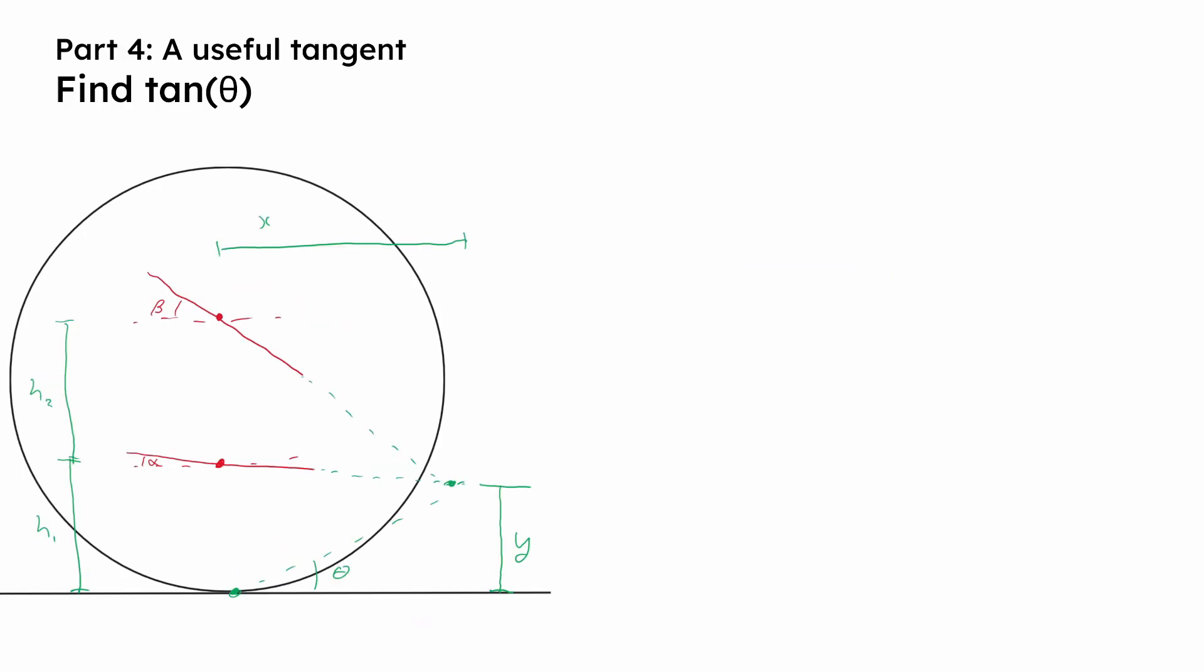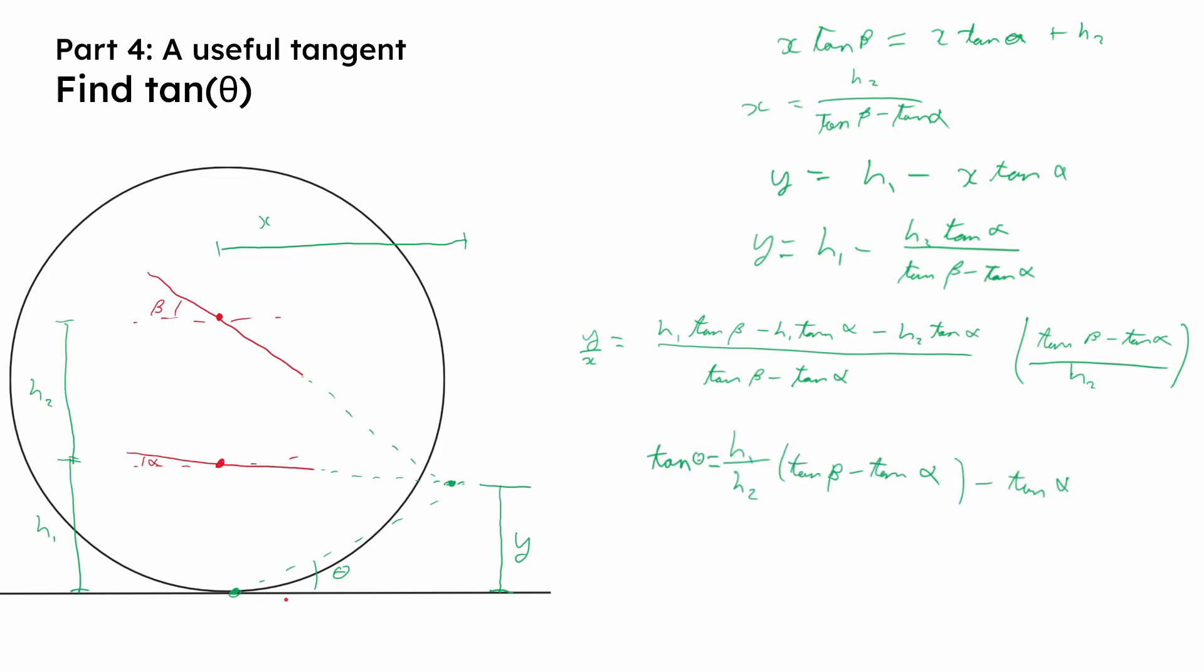Although this seems unrelated, finding tangent of theta can greatly simplify the anti-dive calculations. We want to find it in terms of H1, H2, alpha and beta. Finding it in terms of X and Y right now is not particularly useful, hopefully for obvious reasons. The top equation is saying that at the intersection point, the vertical distance below the upper wishbone is the same, and this gives us an expression for X. You can also find an expression for Y in terms of X, then use our expression for X. The equation is then divided by X to find Y over X, which is equal to tan theta, which hopefully makes sense given that this is just a right angle triangle with the opposite side being Y and the adjacent being X. And then it can be simplified into this.